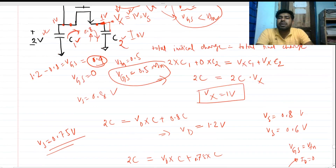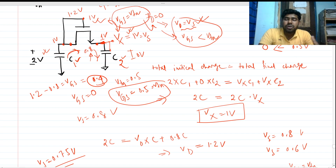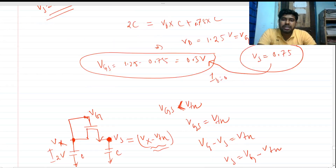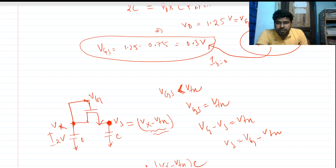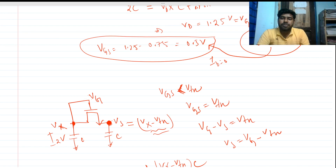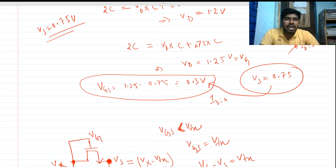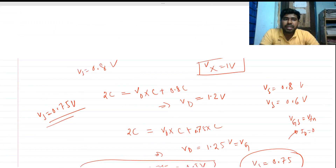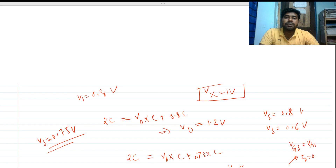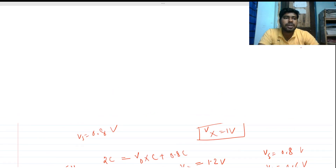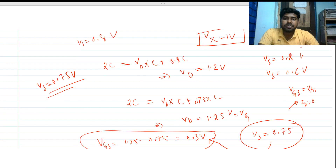So the steady-state voltage is 0.75V. You can use trial and error or this analytical concept — the source potential must be one threshold lower than the gate voltage. This is a very good question. Please give your valuable feedback. Thank you everyone.